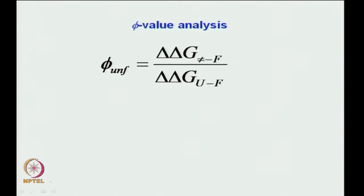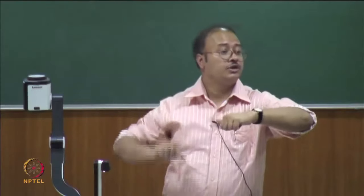So what is this phi value analysis? Let us look at the formula first. Phi unfolding means you are unfolding a protein — starting from the folded state and going to the unfolded state. It is equal to delta-delta G‡ minus F, because you are going from the folded state to the unfolded state. The difference between the transition state and the folded state is the energetic barrier, and we are considering a delta-delta.